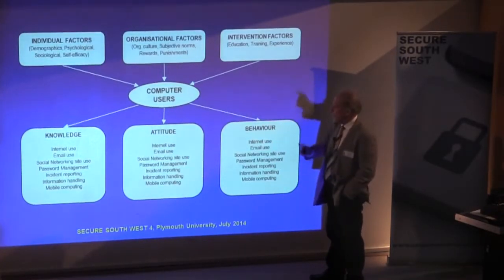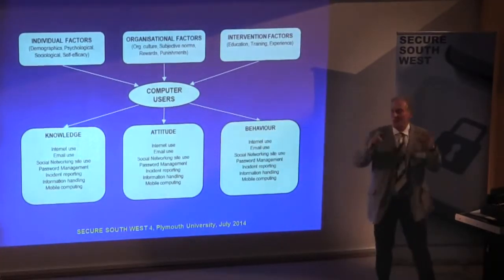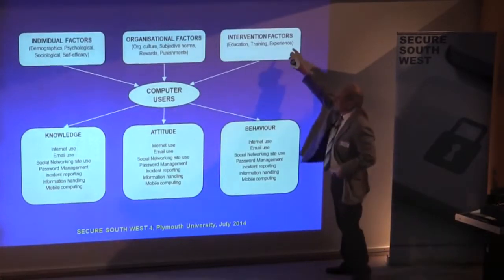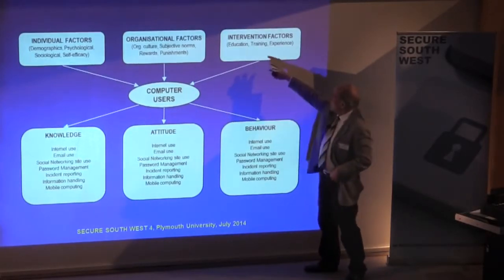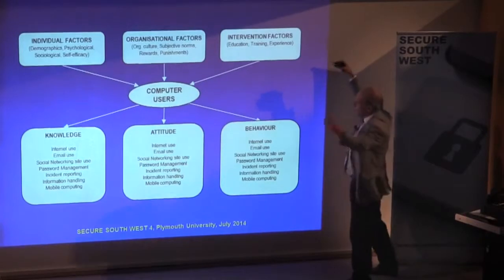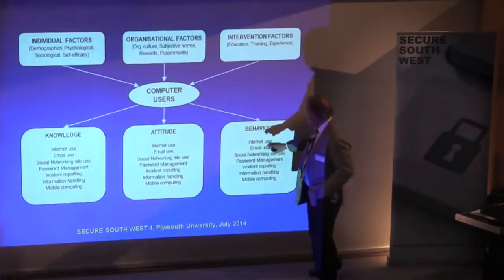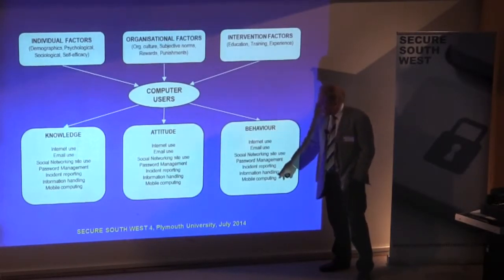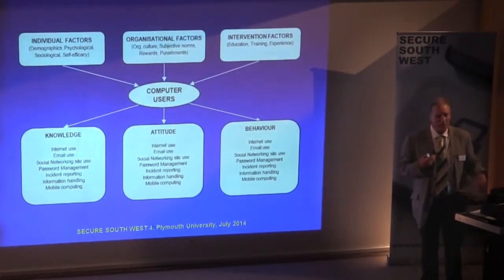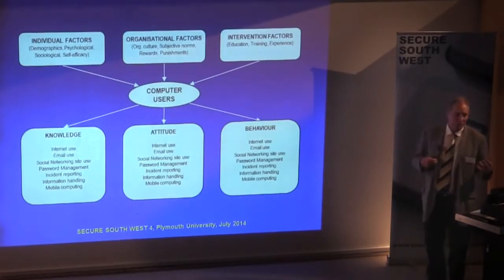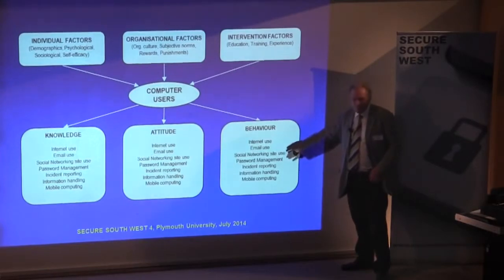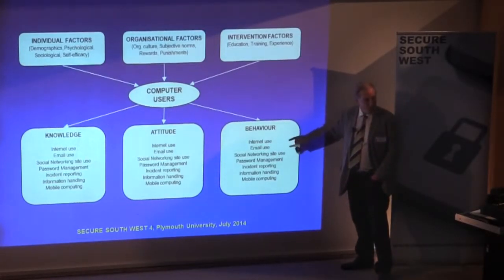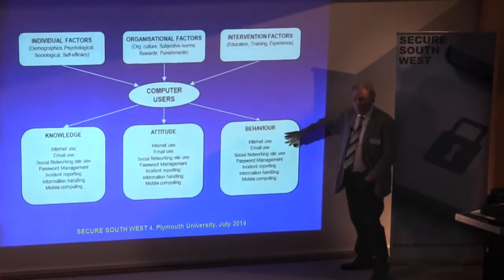Don't assume that those three elements — knowledge, attitude, and behaviour — necessarily represent information security awareness. It's up for grabs. Intervention factors have a lot to do with people's knowledge — education, training, and experience on the job. All these things come into a computer user and give them knowledge. The seven focus areas we think are most important in terms of breaches and security issues, according to senior management and CISOs, are: internet use, email use, social networking site use, password management, incident reporting, information handling, and mobile computing.